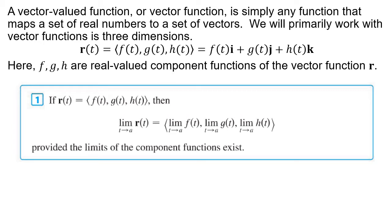So what is a vector value function? It's also called a vector function, but it's simply any function that maps a set of real numbers to a set of vectors. We're primarily going to work in three dimensions. You could write a vector function in i, j, k notation, where each component is a real-valued function of t. Your f, g, and h are the real-valued component functions for vector r. Just like in Calc 1, we can do limits, derivatives, integrals, and all sorts of operations.